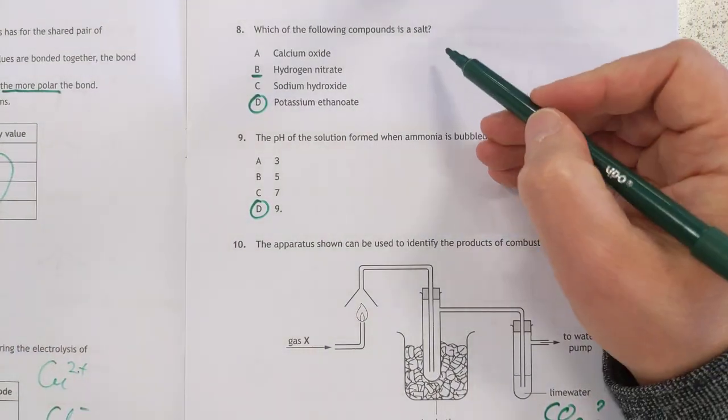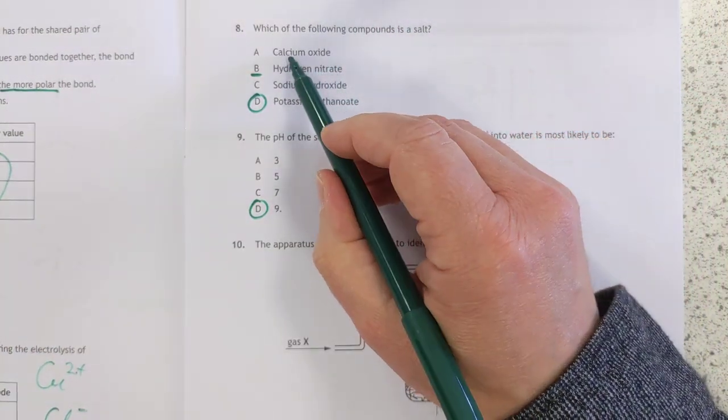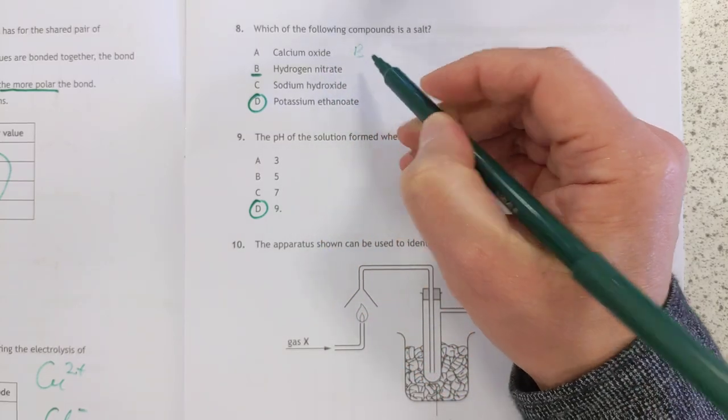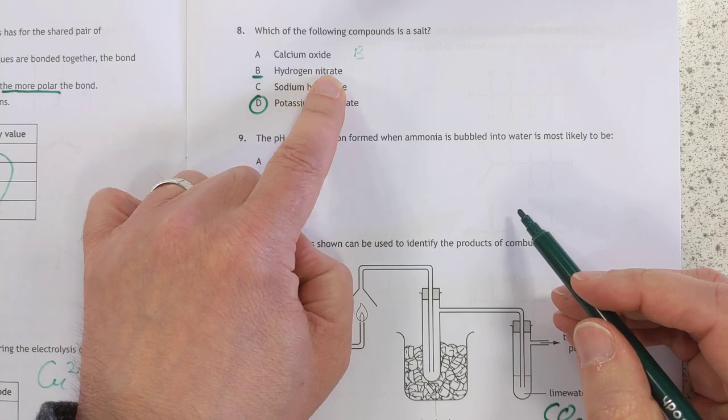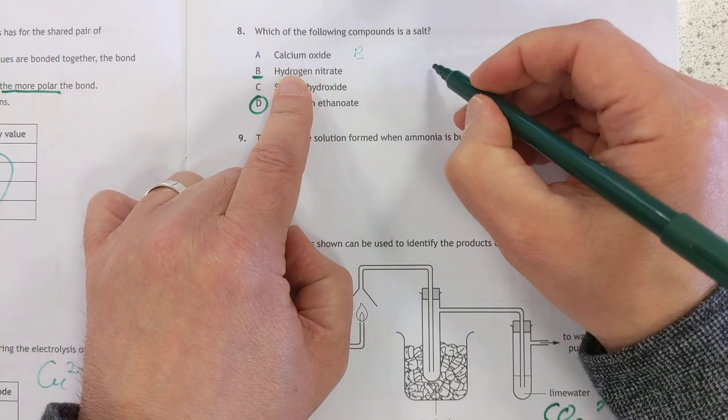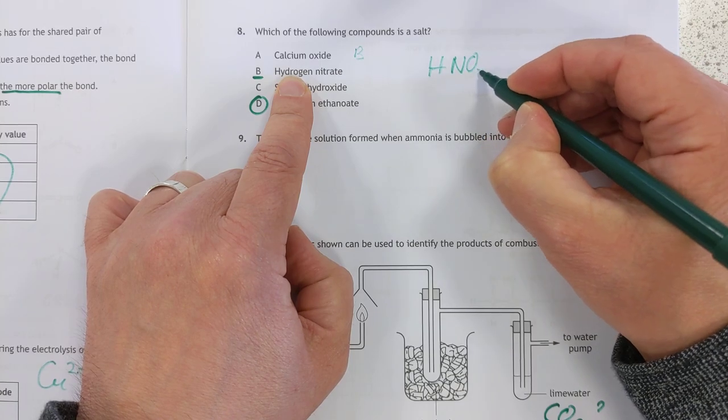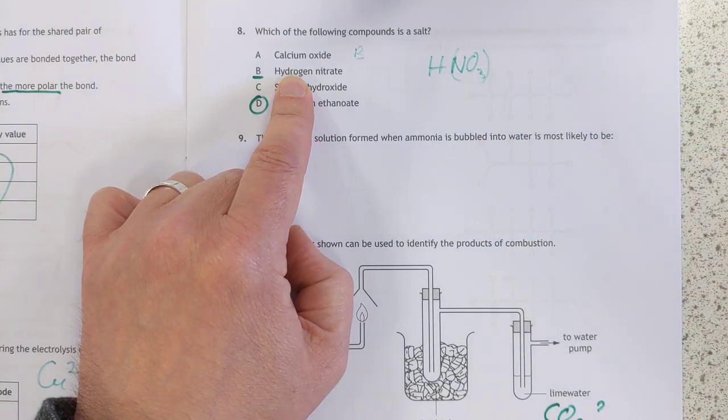Eight, a salt, sneaky question this one. Because metal oxide, everybody's going to remember, oh yeah, that's a base. I need a better pen. This one, you're tempted to perhaps put it because you see nitrate. However, hydrogen nitrate is actually nitric acid. I'm going to get a better pen, excuse me.